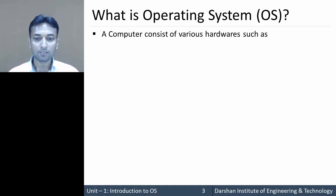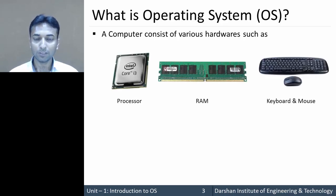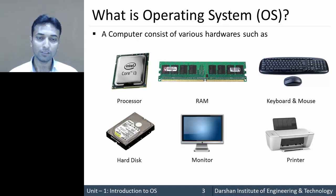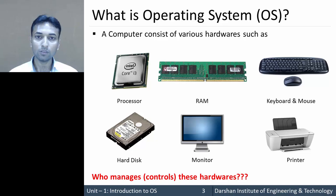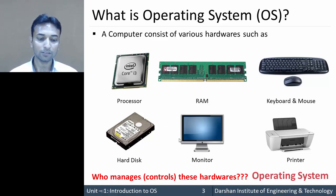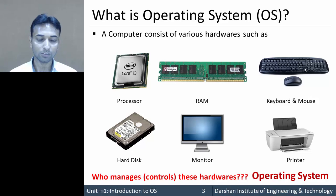Our computer consists of various hardware such as processor, RAM, mouse, keyboard, hard disk, monitor, printer, and many more. So we need a program or software that can manage all these hardware components. That program or software that controls or manages all these hardware resources is nothing but an operating system. Simply, we can say that an operating system is a program or software which manages all the hardware resources present in our computer system.